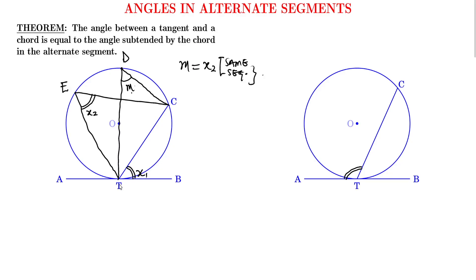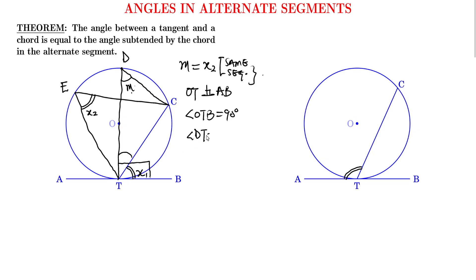Now let's come down to the point of contact. There are a few things going on here. We have OT, which is the radius, and AB, which is the tangent. We know that OT is perpendicular to AB from a previous result. So the whole angle OTB is 90 degrees. The remaining angle DTC is therefore 90 minus X1.